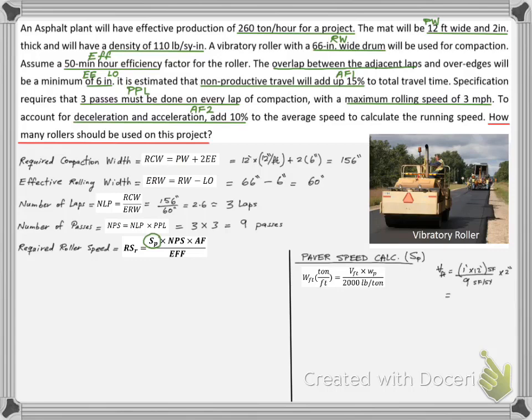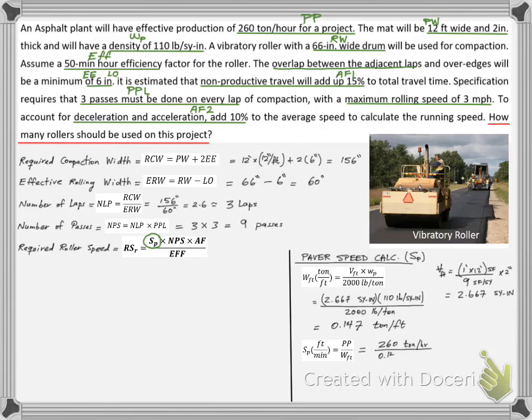We start first by calculating the weight of a one-foot stretch of the road. We need to be careful matching the volume and density units as shown. Then we calculate the paver speed that matches the plant production, which we find to be 29.5 feet per minute.